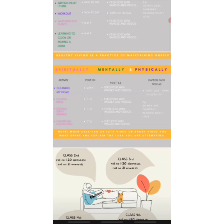Watering the plants is to be done on Monday, Wednesday, and Friday. You have to water plants that are inside your house — in a balcony, rooftop, or terrace. If you don't have a plant at home, you should plant one or borrow it from your neighborhood and then water it. You can make a short video of less than one minute and click a picture along with it.